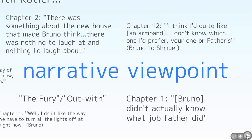Some of the things Bruno fails to understand or pronounce correctly: 'the Fury' for the Führer — Hitler — and 'Out-With' for Auschwitz, which could be suggestive of what the Nazi people wanted to do to the Jews: what we call 'ethnically cleanse' their country — a political euphemism for wanting to get rid of them. Bruno also doesn't understand why the lights are off — the blackouts — obviously because of bombings; they don't want the Allies to be able to find out what's going on inside Germany.